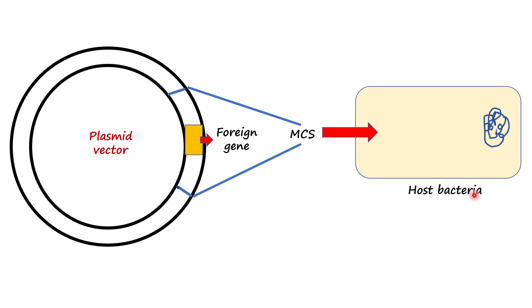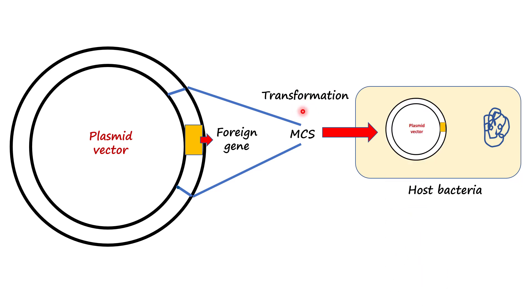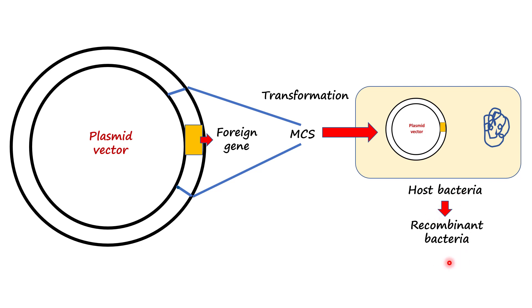Then we insert the vector into the host bacteria. This process is called transformation. If the transformation is successful, the bacteria receives a foreign DNA and we call it recombinant. Now the question is: how do you know whether the bacteria has become recombinant or not?